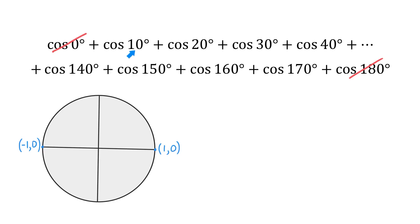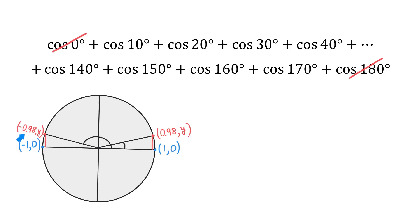Now let's take a look at cosine of 10 degrees and cosine of 170 degrees. On the unit circle, this angle has the measure of 10 degrees, and this one has the measure of 170 degrees. The values of cosine of these two angles will also represent two opposite numbers. If we use a calculator to evaluate cosine of 10 degrees, we get an approximation of 0.98, and cosine of 170 degrees gives approximately negative 0.98. So for the angle of 10 degrees, x is approximately 0.98, and for the angle of 170 degrees, x is approximately negative 0.98.